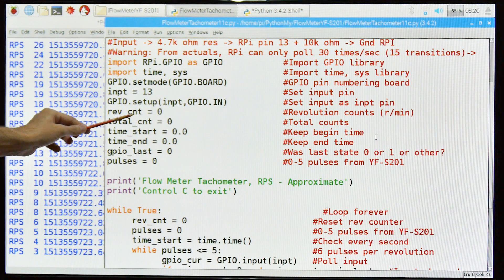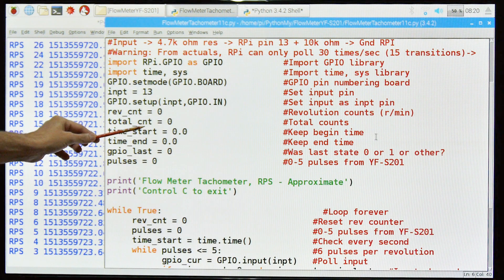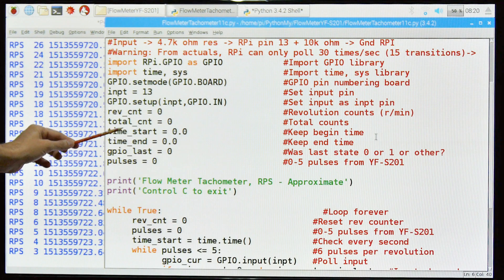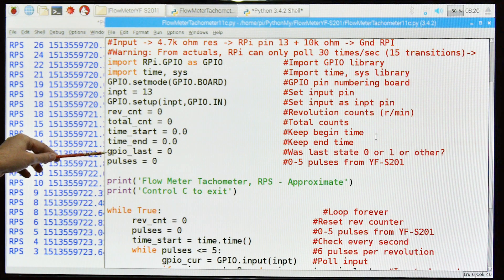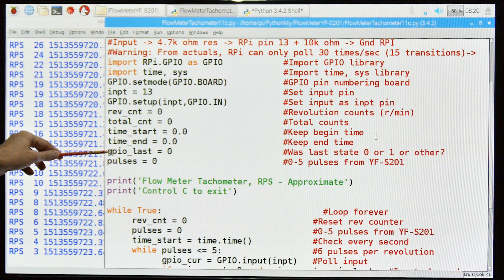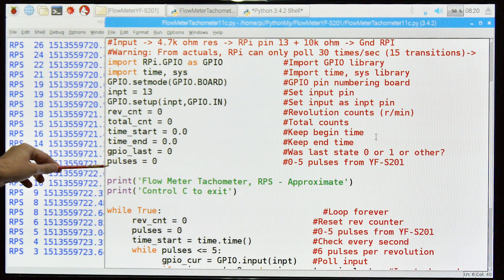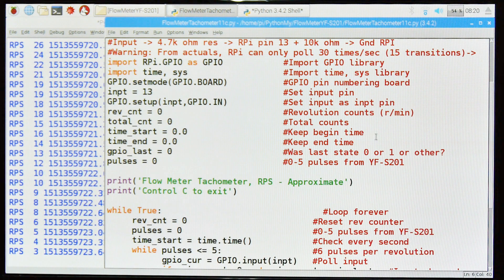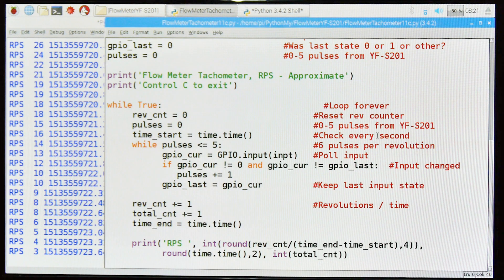This is the revolution count, how many revs per second we're going to do. Total counts just for fun. Time start, time end. I'm keeping these so I can know when the impeller is stopped and to get revolutions per second. GPIO last condition, was it a zero or one? This is another thing I'm doing to ensure I don't get false readings from a stopped impeller. And then the last thing is the number of pulses, zero to five, in other words six pulses from the meter.